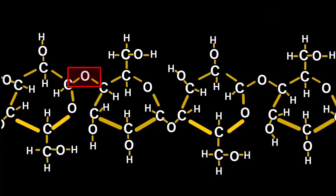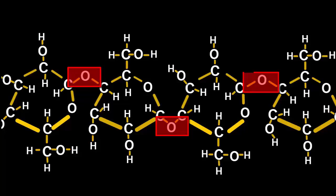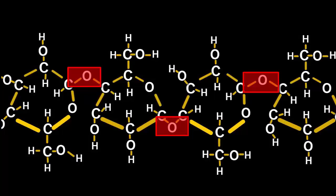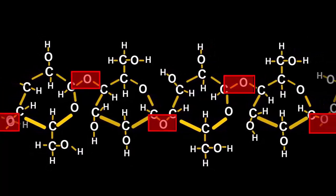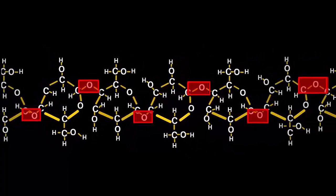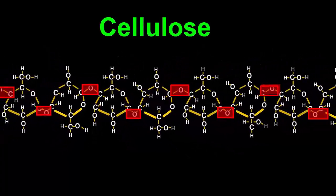This shows how the glycosidic bonds, they're at the points where the water is extracted, are created on alternating sides of the molecule. Hundreds or thousands of glucose molecules can join end to end to build long chain molecules of a substance called cellulose.